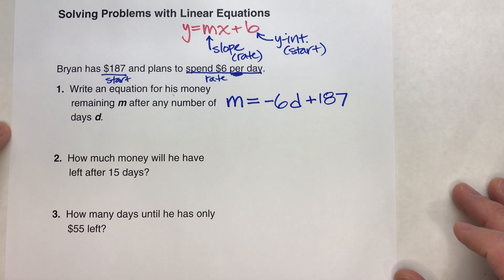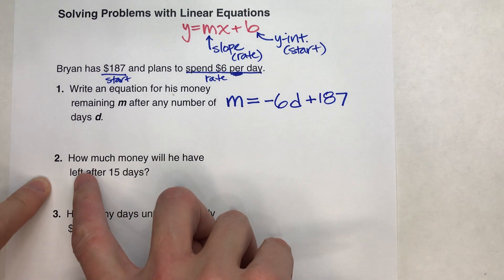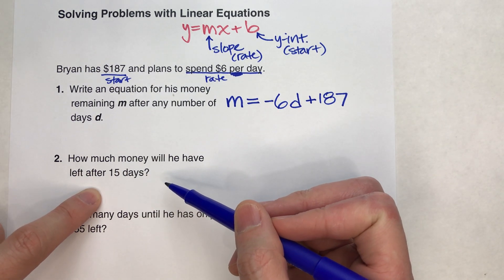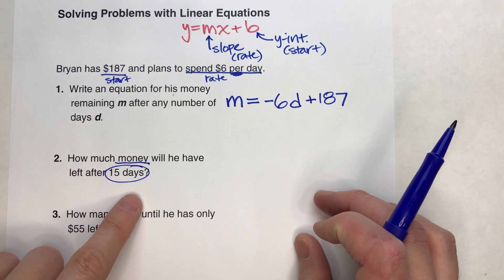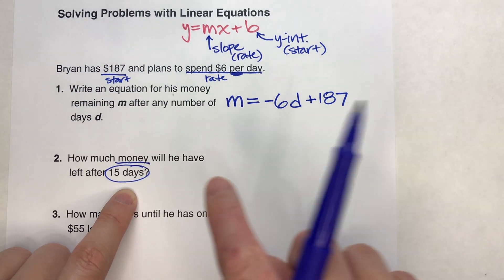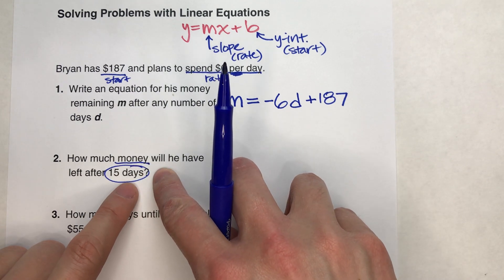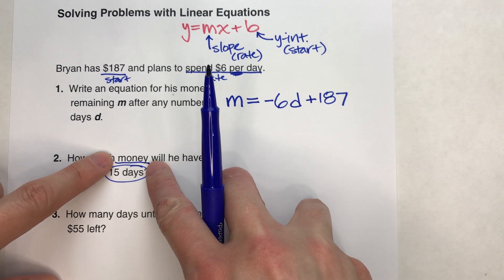So now we're going to use this equation to solve some problems. For number two, how much money will he have after 15 days? So we're trying to figure out how much money and we're told we're working with 15 days. What we're going to do is substitute the amounts that we have, that we know, into our equation and figure out the amount that we don't know.